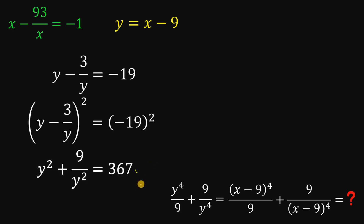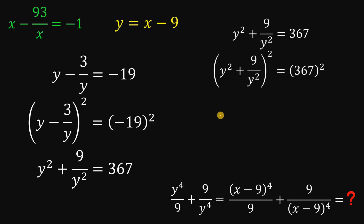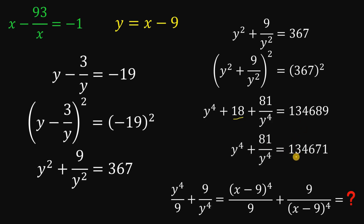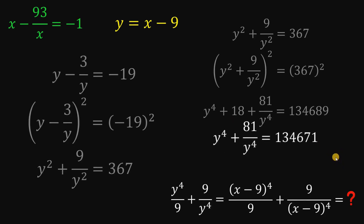Using this result and squaring it, we expand to get y raised to the fourth power plus 18 — because 2 times y squared times 9 over y squared, the y squared cancels, leaving just 2 times 9 or 18 — plus 81 over y raised to the fourth power equals 367 squared, which is 134,689. Subtracting 18 from both sides gives us 134,671.